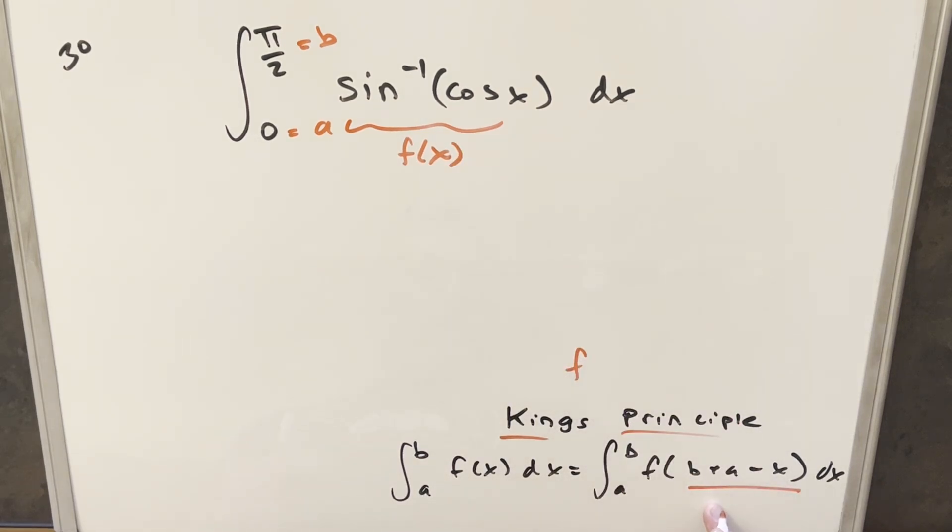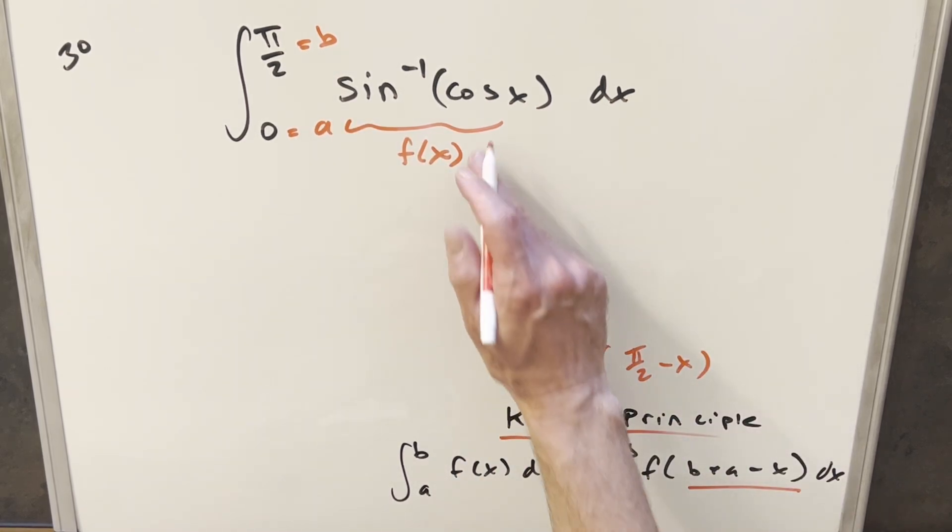So in this case, for our f of b plus a minus x, we add the bounds, and we get pi over 2 minus x, and we just need to plug this in here.